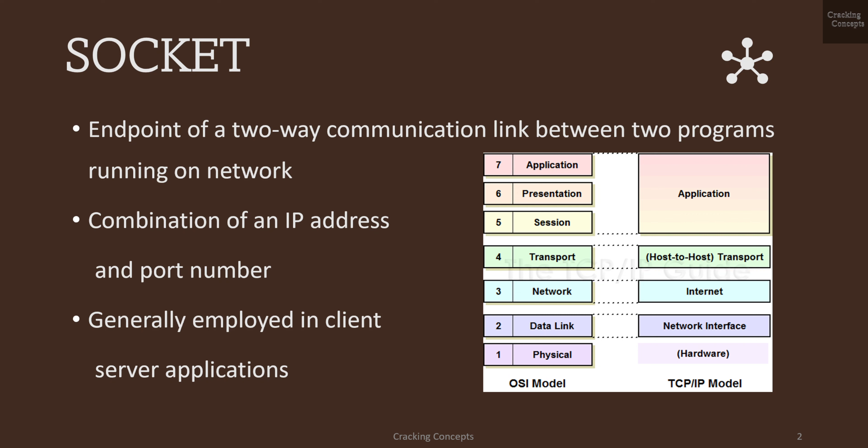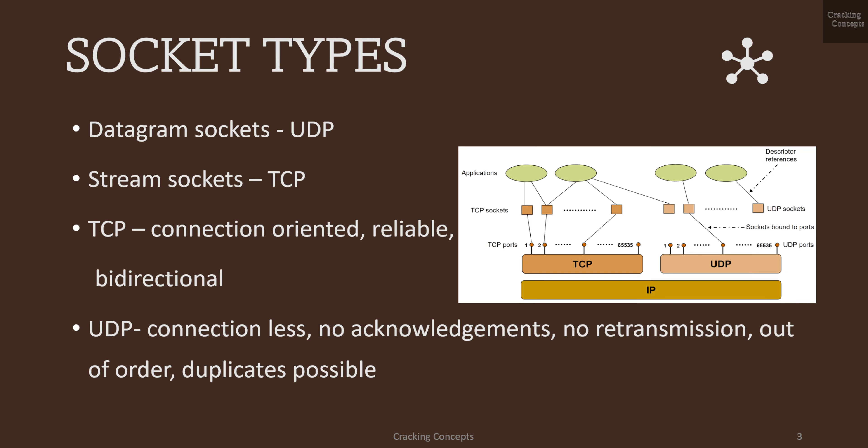There are different types of sockets available: datagram socket, stream socket, and raw sockets. Datagram sockets and stream sockets vary in the transport layer protocol they use. Datagram sockets use UDP and stream sockets use TCP.